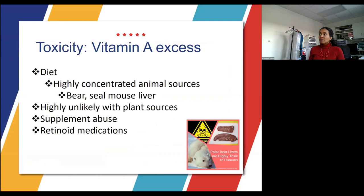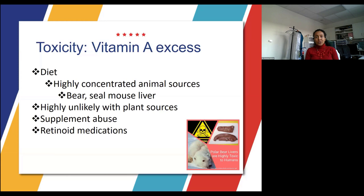When you have too much vitamin A — vitamin A excess — that is certainly not a good thing either. One reason vitamin A excess can happen is diet. Consuming highly concentrated animal sources such as bear, seal, or liver can cause excess. Vitamin A excess is very unlikely with a plant-based diet — it is exceedingly rare.